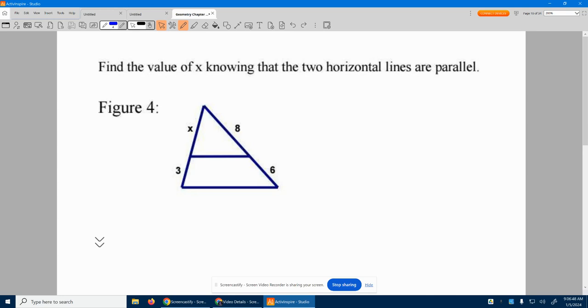We want to find the value of x knowing the two horizontal lines are parallel. Here's Figure 4. We notice they're on the side. We don't have to do small triangle to big triangle. We can just do the side splitter theorem, which tells us x over 3 equals 8 over 6.